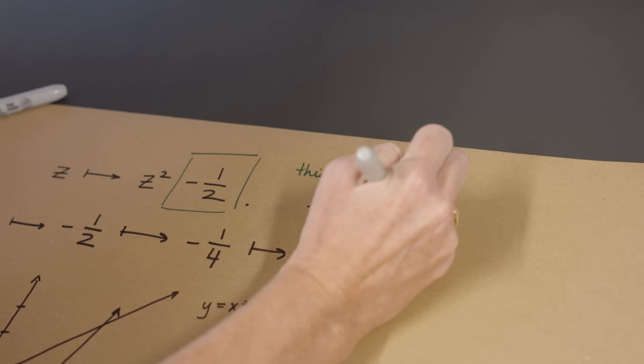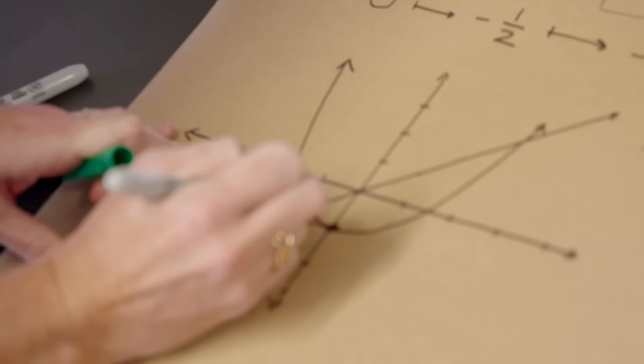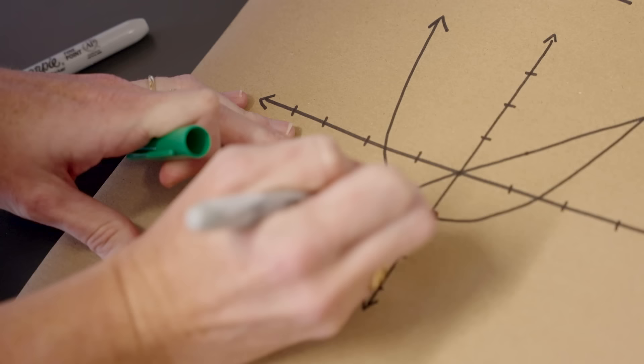So the key feature here is that this minus one half has the property that this process sends everything close to a single point. So I've got one point here, and as I do this process I get closer and closer and closer to that point.